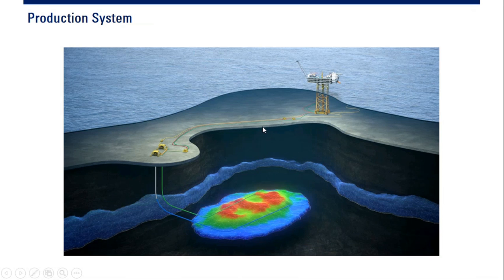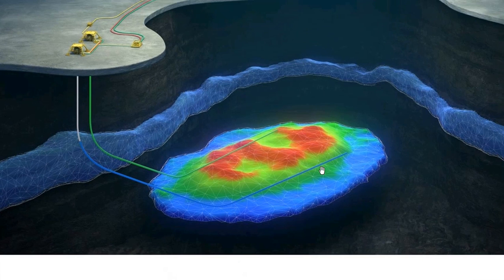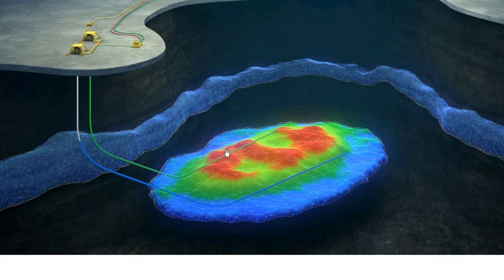This is the production system in an offshore environment. We have a platform here, and this is the subsea wellhead or subsea Christmas tree. Down there we have the reservoir. You can see the blue line — we call it the aquifer, the water layer. And then the green zone is the oil reservoir, and the red zone is, of course, the gas cap.